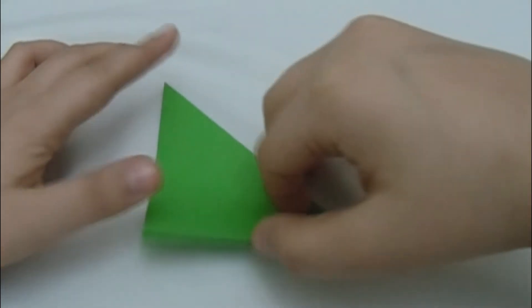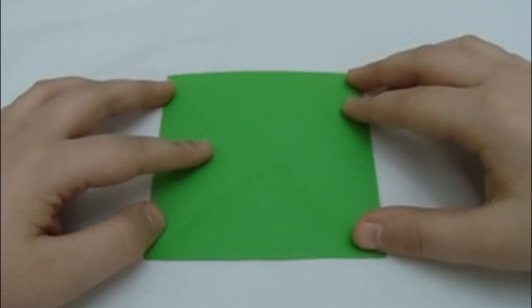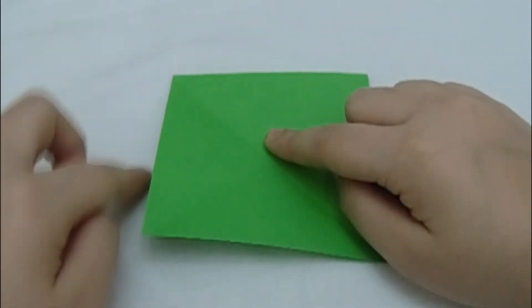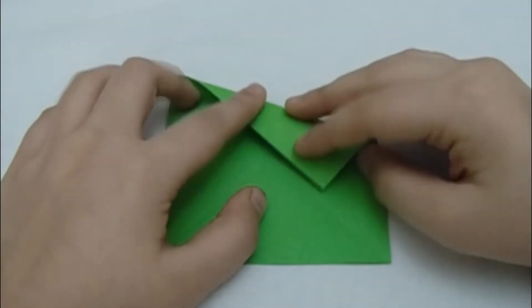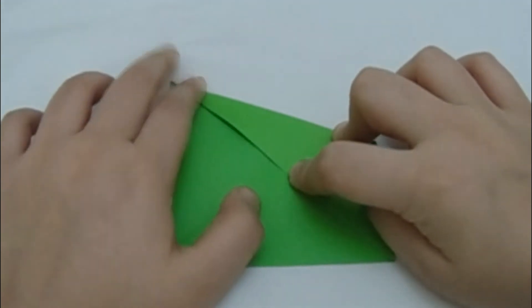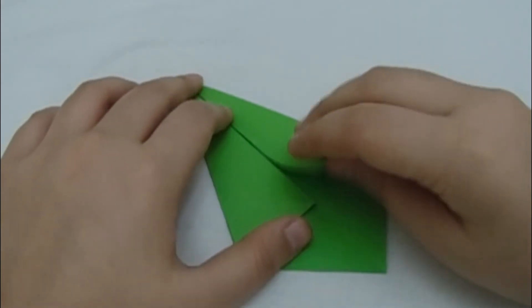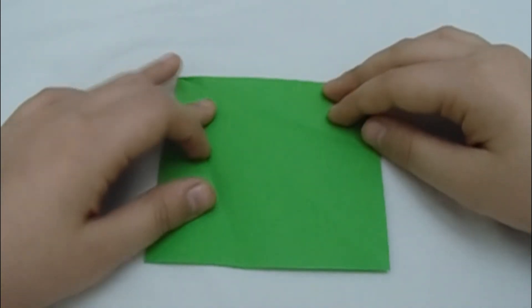I want to fold this. Now you've got this, so fold this edge up to the middle line and this edge up to the middle line, just like this. Now you've got this. Now unfold these two.